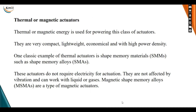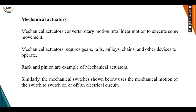The next type is thermal or magnetic actuators. As the name suggests, thermal means converting heat energy to mechanical energy. Thermal or magnetic energy is used for powering this class of actuators. They are very compact, lightweight, and economical with a high power density. A classical example is shape memory materials such as shape memory alloys. These actuators do not require electricity for actuation and are not affected by vibration; they can work with liquids or gases.